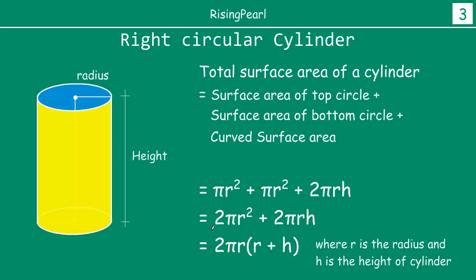So from here we take 2 pi R common. So we have 2 pi R times (R plus H). This is the formula to find out total surface area of a right circular cylinder.